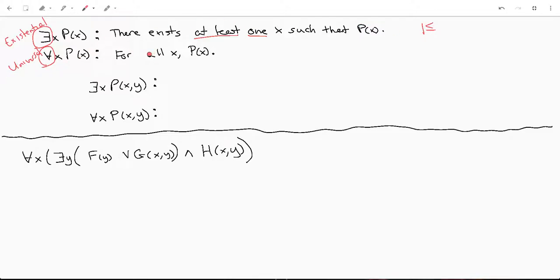This next one is universal and that one means that for all x p of x. So for all people or for all x, x is a person.